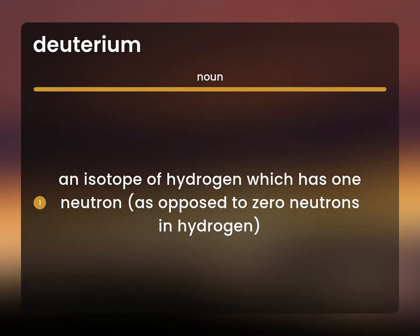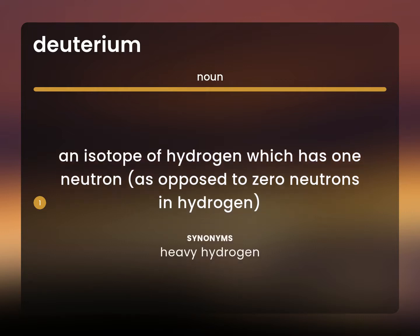An isotope of hydrogen which has one neutron, as opposed to zero neutrons in hydrogen. Heavy hydrogen.